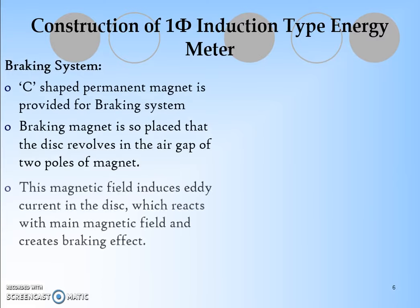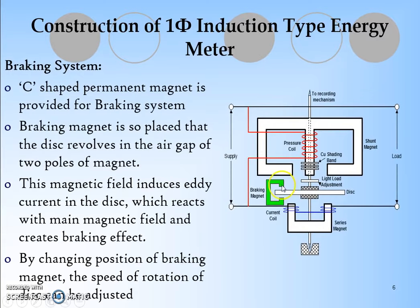Next we will discuss about the braking system. Braking system is provided by the C-shaped permanent magnet. The braking magnet is so placed that the disc revolves in the air gap between the C-type magnet. This magnetic field induces eddy current in the disc which reacts with the main magnetic field and creates braking effect. By changing the position - keeping the magnet inside or outside - we can control the braking effect.